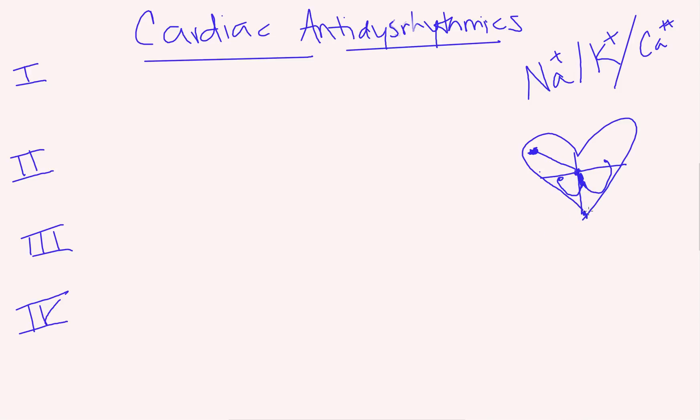So that's the concept behind all of this. We're going to talk about classes one and three together, and then two and four together, because that's how they fit together best conceptually. Just remember: one and three always go together, and two and four go together — the odds and the evens go together with cardiac anti-dysrhythmic drug classes.